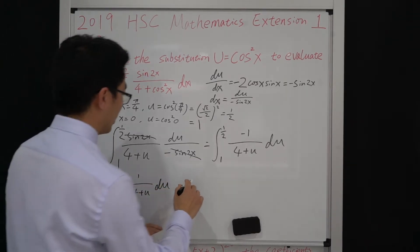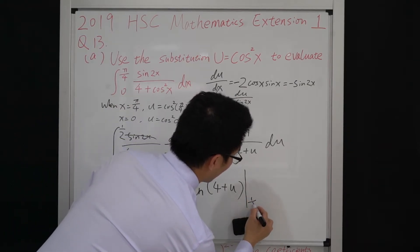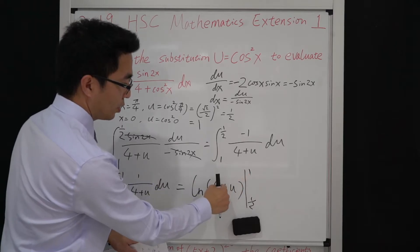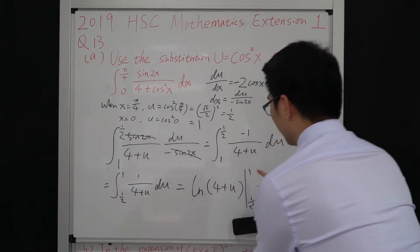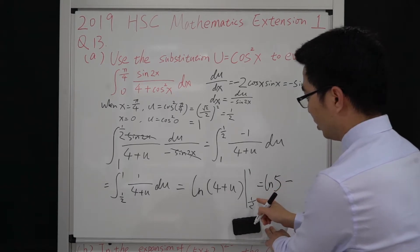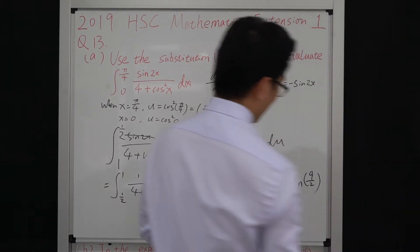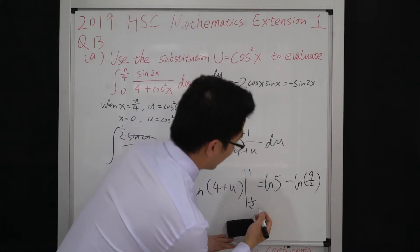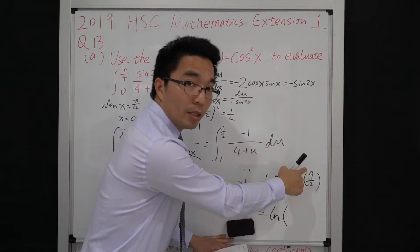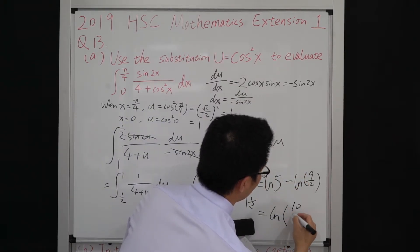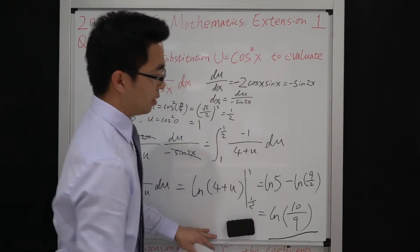This equals ln(4 + u) evaluated from 1/2 to 1. Substituting in: ln(4 + 1) minus ln(4 + 1/2) gives ln 5 minus ln(9/2). Using log laws this simplifies to ln(5 × 2/9) equals ln(10/9). That's your final answer: ln(10/9).